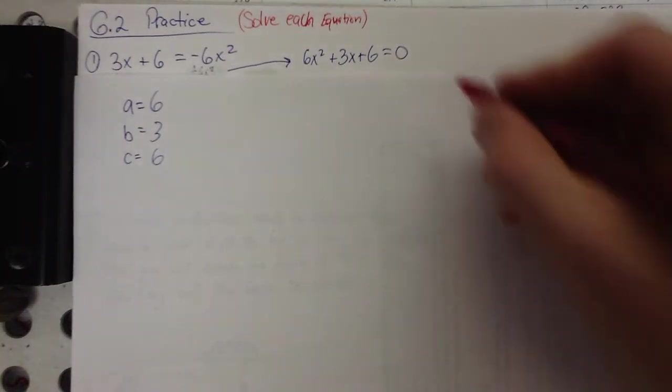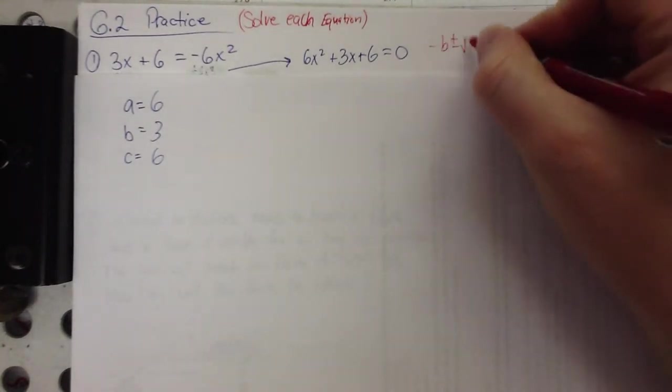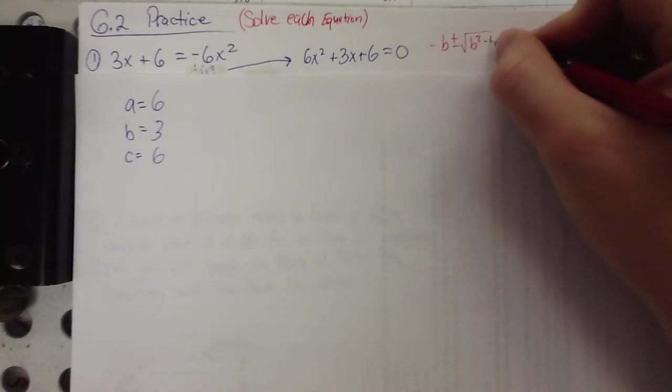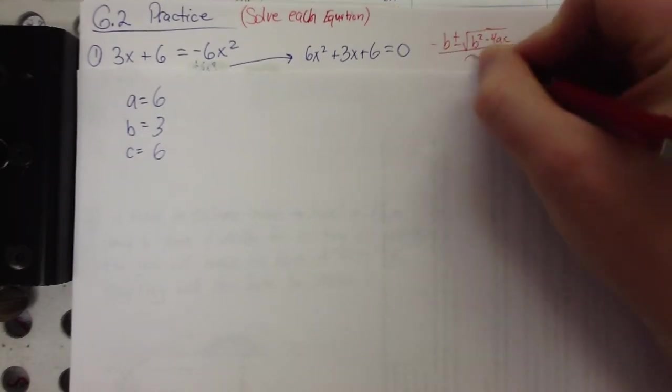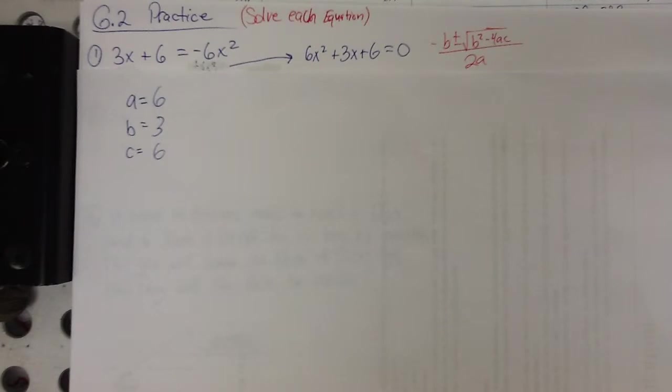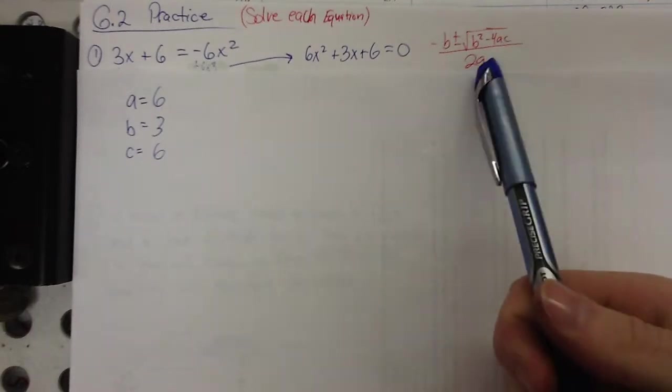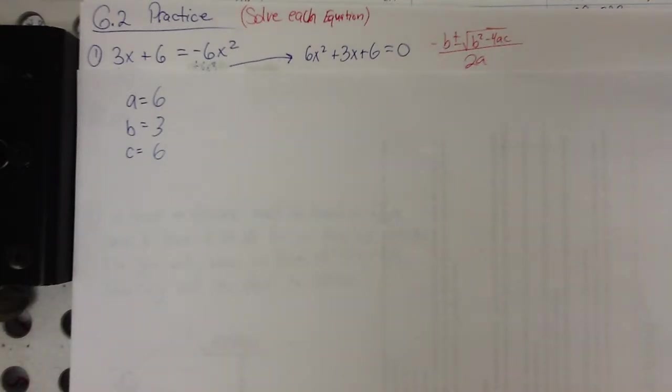Alright, quadratic formula, one more time. Negative b, plus or minus the square root, b squared, minus 4ac, all over 2a. If you don't have it memorized, you need to make that happen. You need to go ahead and do that now. If you don't memorize this formula, that's really going to hurt you in the rest of the class and for every math class beyond here.